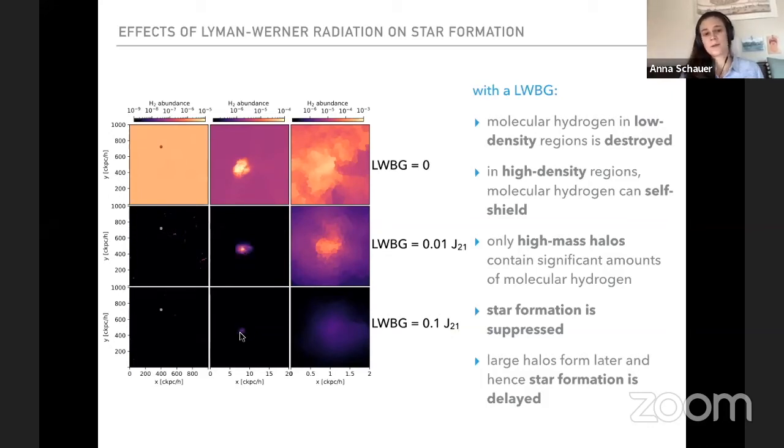Because Lyman-Werner radiation can be self-shielded by molecular hydrogen. So as soon as we have a big enough halo with enough gas, molecular hydrogen can self-shield in that halo. And in those cases, star formation is still possible because the gas can still cool and become very dense in the center. But we again need to move to larger halos and therefore star formation generally is suppressed. And because those larger halos form later in the universe, star formation is also delayed.